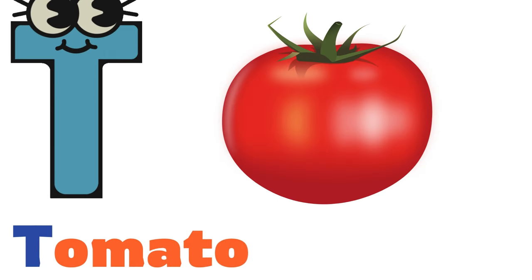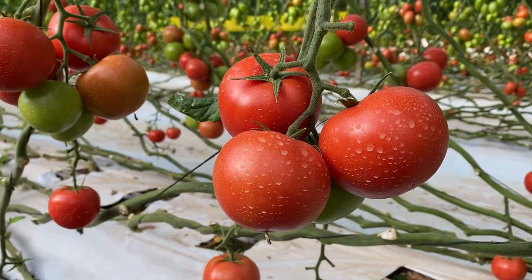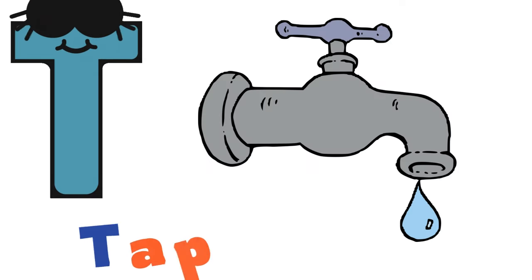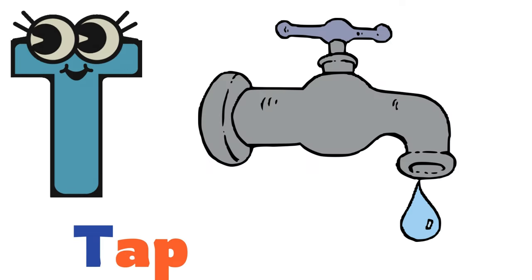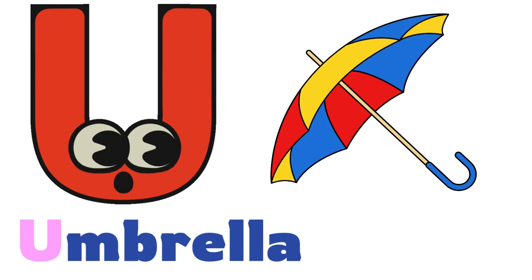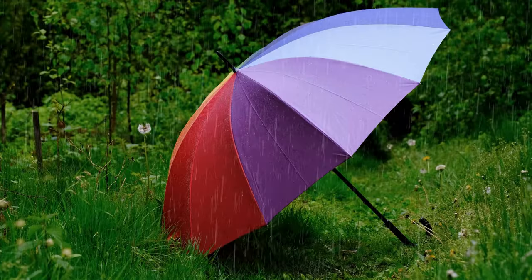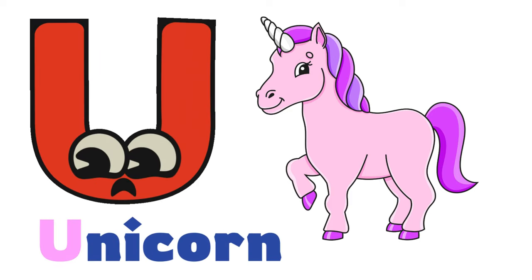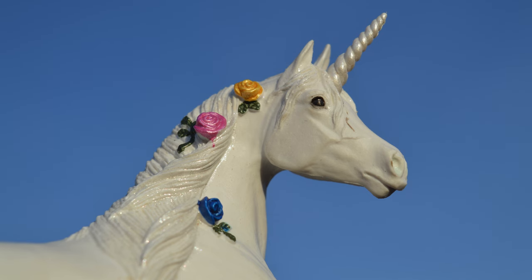T. T for Train. Train. T. T for Tomato. Tomato. T. T for Tap. Tap. U. U for Umbrella. Umbrella. U. U for Unicorn. Unicorn. U. U for Uniform. Uniform.